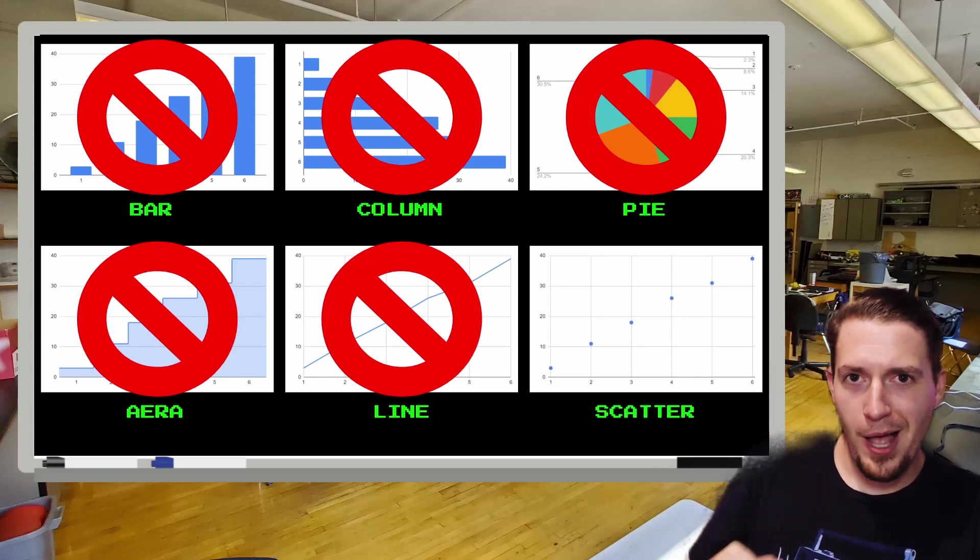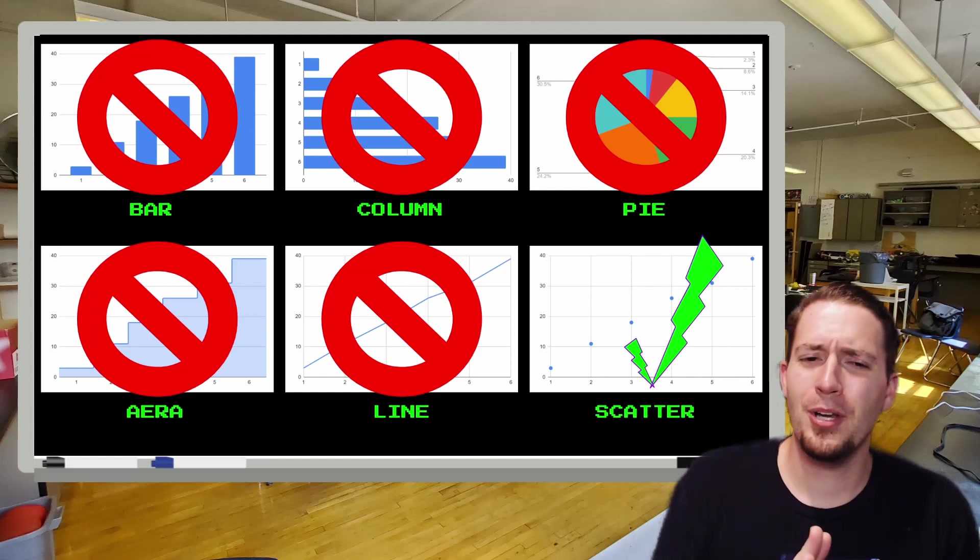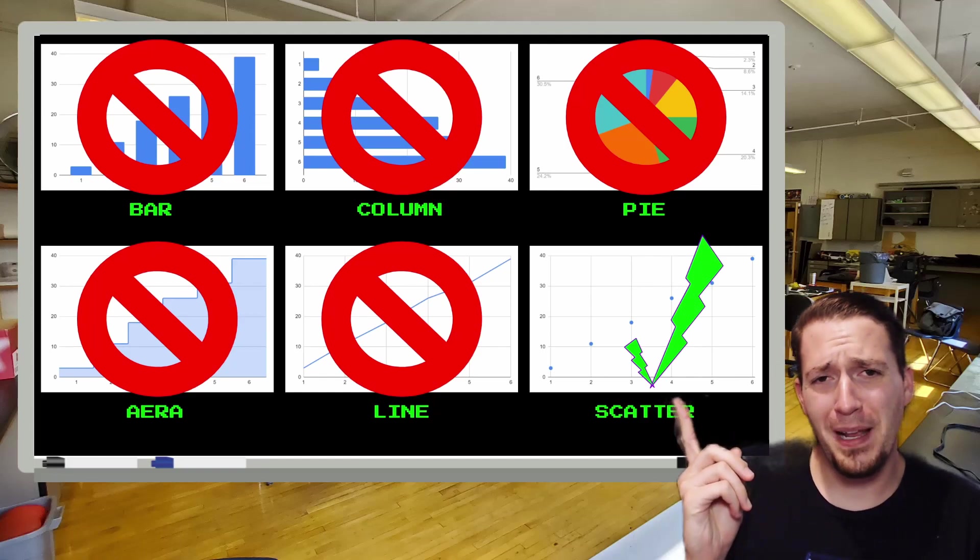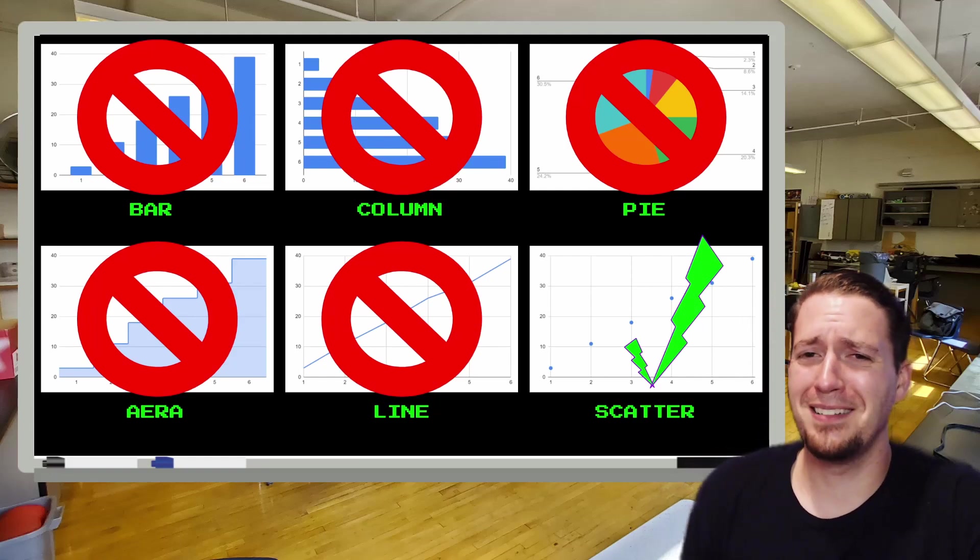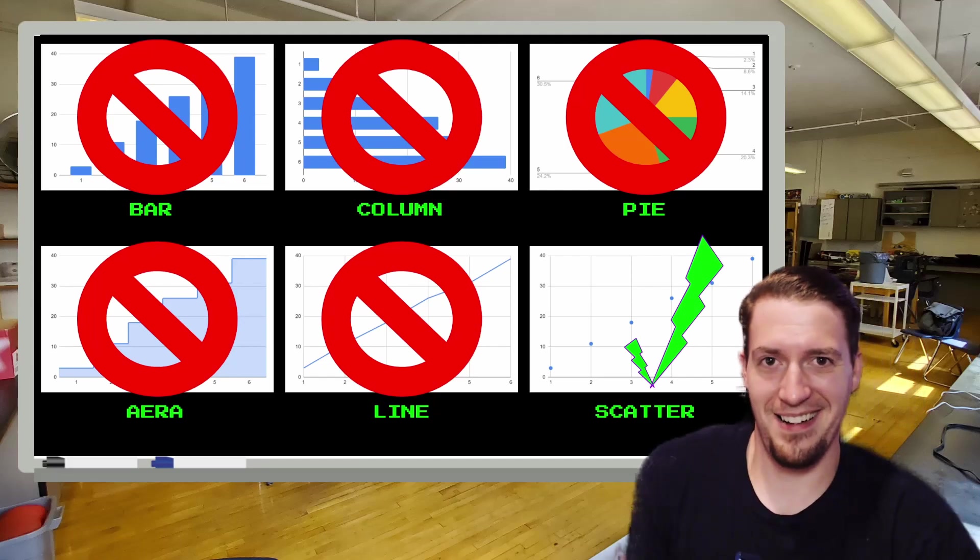So, is that a scatter plot? Ding, ding, ding, we have our winner. And I know what you're asking. Is that a checkmark made out of lightning bolts? You bet there is. Only because Google Slides does not have a checkmark built into it. But I kind of like it.